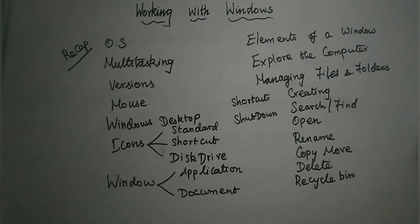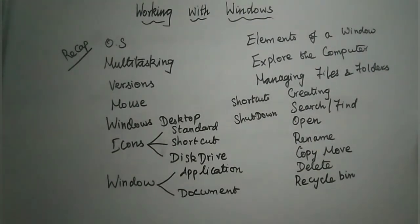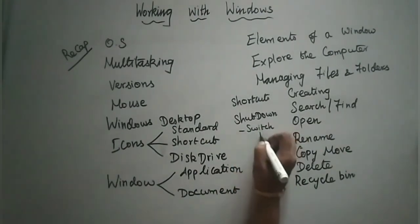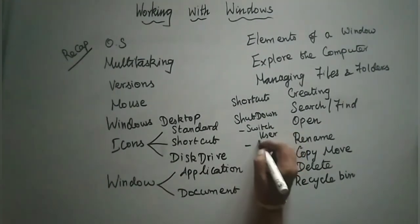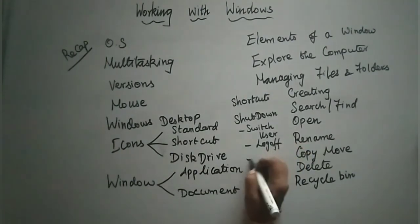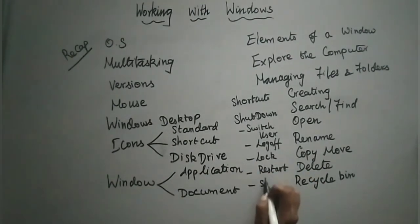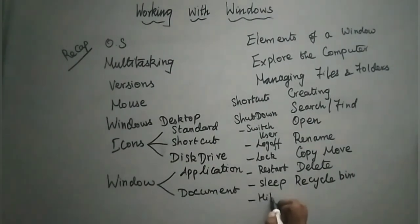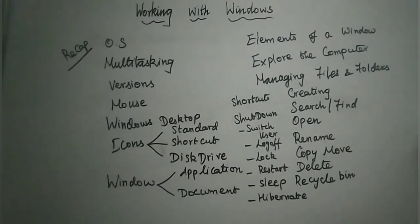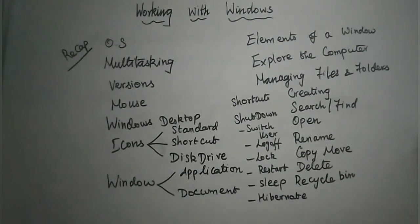Under each topic you will be having one or two methods — go through each one. Under shutdown the options discussed are: Switch User, Log Off, Lock, Restart, Sleep, and Hibernate — this last option is seen only in the laptop. So these are all the topics discussed in Chapter 5, Working with Windows. Thank you, students.